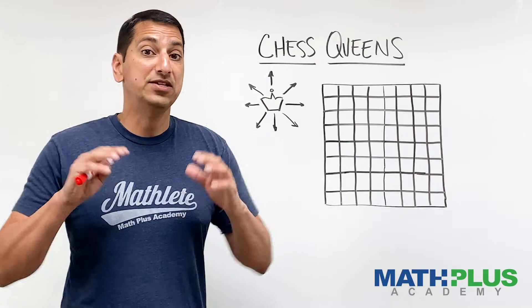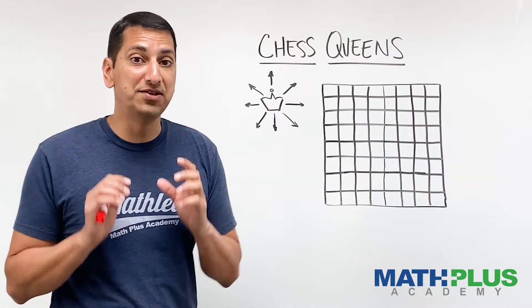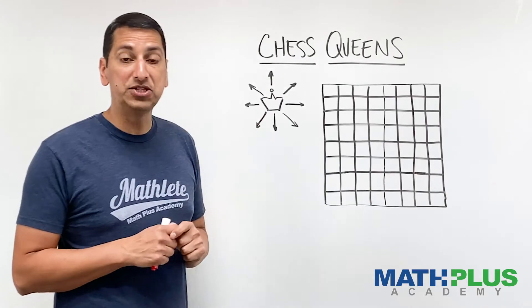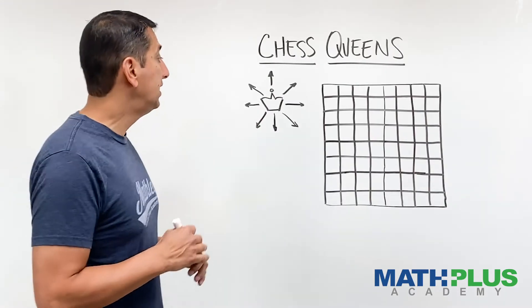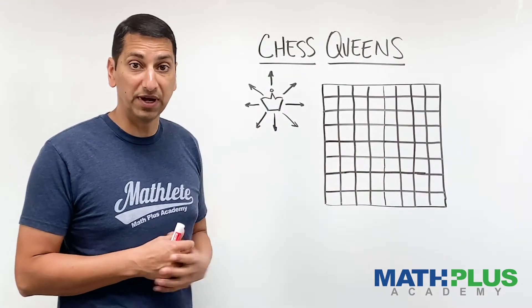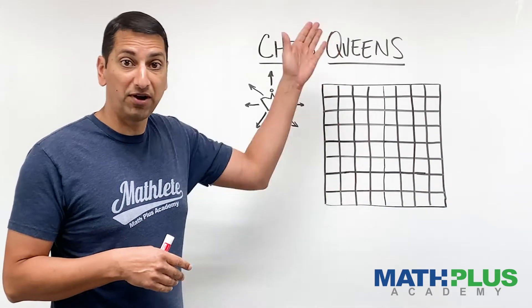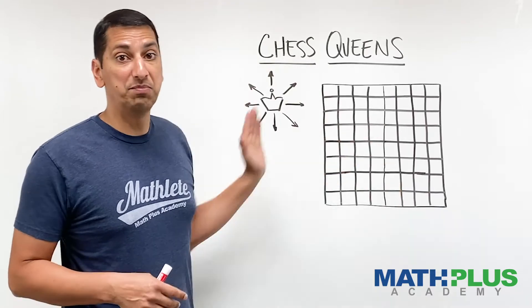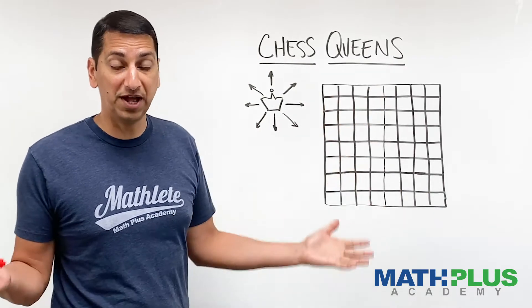Such that no queen attacks another queen. So let me show you what I mean. A queen in chess, in case you're not aware, is allowed to be on any square, and then can move up and down as far as possible, left and right as far as possible, and on both diagonals as far as possible.